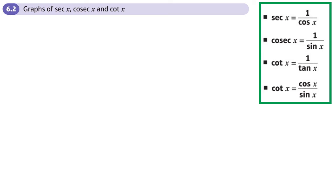This is the second section on chapter 6, which is all about trig functions, and today we'll be looking at the graphs of sec, cosec and cot. We already know that sec, cosec and cot are the reciprocals: sec is the reciprocal of cos x, cosec is the reciprocal of sin x, and cot is the reciprocal of tan x. We need to know what their graphs look like, so let's start with sec x.